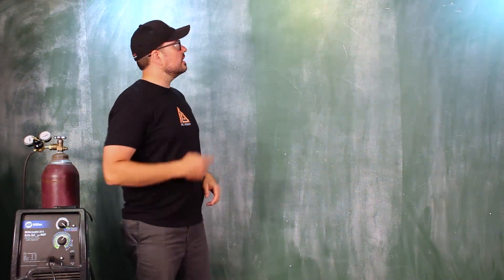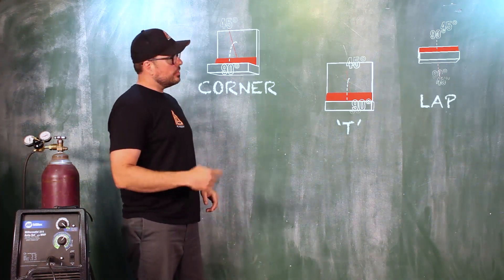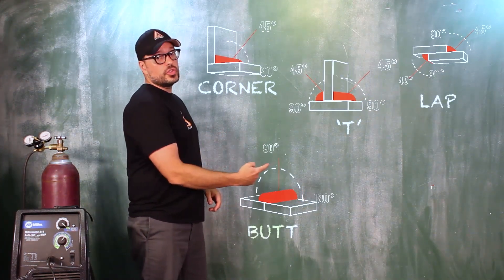So these three here: corner joint, T-joint, lap joint. Then you have the butt joint and the edge joint.